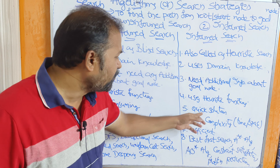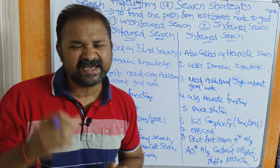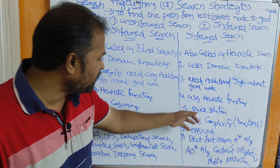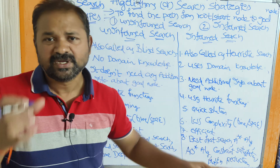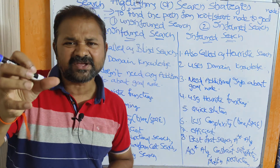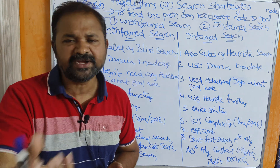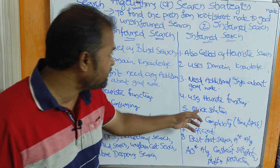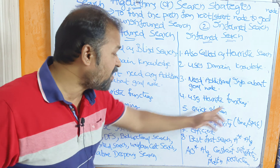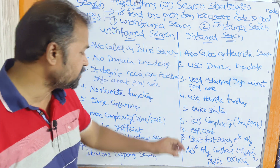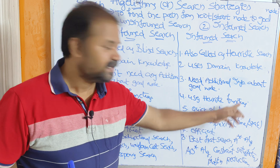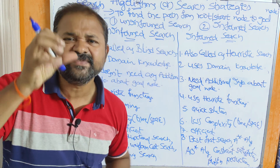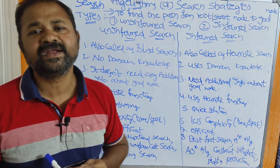Whereas informed search produces a quick solution, because there is no need to explore all the available nodes. Out of all the neighboring nodes, based on the heuristic functions we find the best neighboring node and proceed accordingly. So informed search reaches the goal node in a faster manner, resulting in less time complexity and less space complexity.